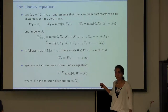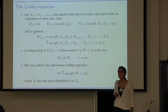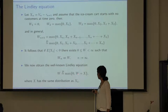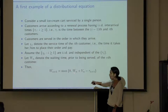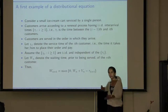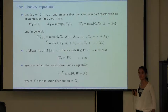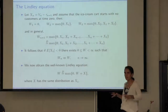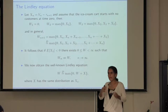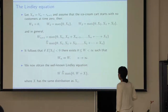Taking limits in the recursive equation as n goes to infinity, this limiting W must satisfy a distributional equation: W is equal in distribution to the maximum of zero and an independent copy of itself plus the increment X. Here W and X are independent. This is my first example of what we call a distributional fixed-point equation — the very famous Lindley equation — perhaps the simplest example, and one we know pretty much everything about. Basically, a random variable on the left has the same distribution as some mapping of the same random variable on the right.